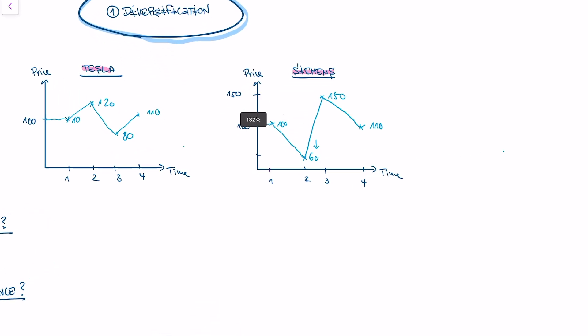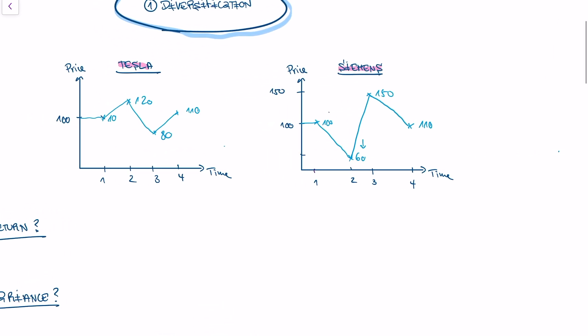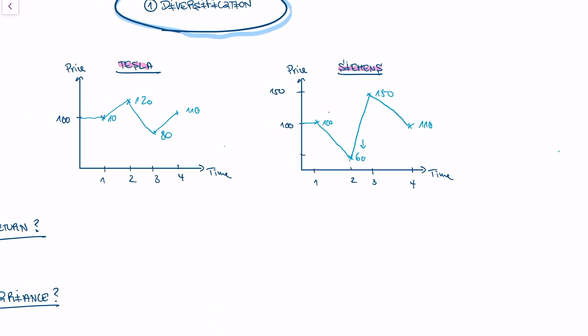So I've plotted two stocks here, Tesla and Siemens. Tesla is a car company, and Siemens is a train company. And here you see the development of the prices of Tesla and Siemens, and you see that they actually develop in a different way.